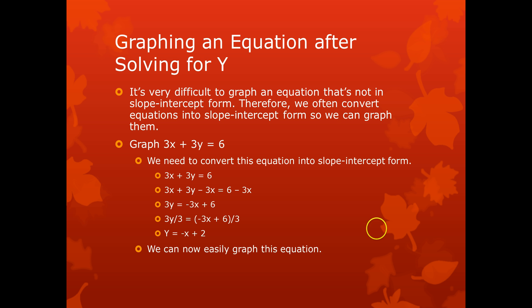So let's graph 3x plus 3y is equal to 6. We first need to convert this equation into slope-intercept form. So, the equation 3x plus 3y is equal to 6. We want to get the y by itself on one side, so we subtract 3x from both sides, and now we have 3y is equal to negative 3x plus 6. We divide both sides by 3, and we'll get y is equal to negative x plus 2. And we can easily graph this equation now.